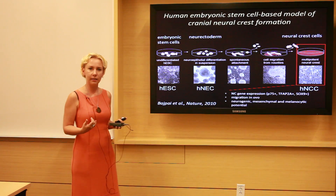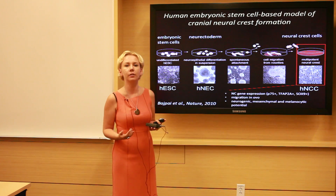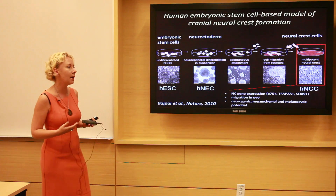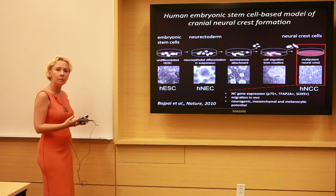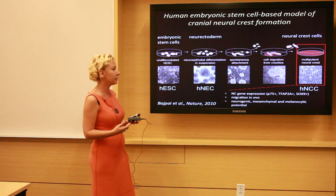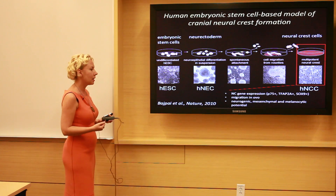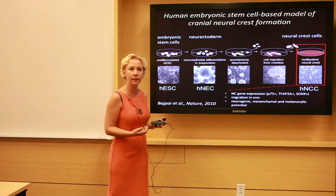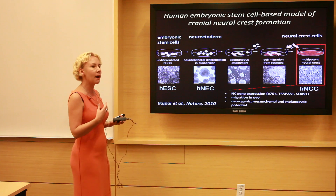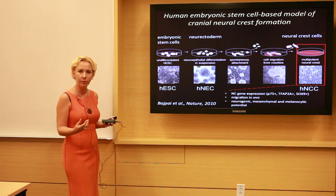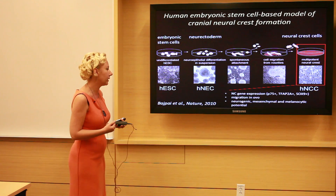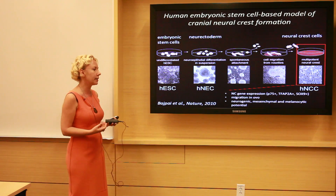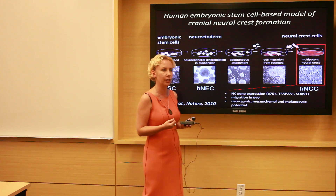But how do we study a cell type that arises at three to five weeks of gestation and is extremely transient and migratory? A couple of years ago, my lab developed a method in which we can derive migratory multipotent neural crest cells in vitro using human embryonic stem cells. These in vitro derived cells recapitulate gene expression profiles characteristic of early neural crests, migrate when implanted into chicken embryos assuming correct positional identities, and retain the plasticity of the neural crest — including neurogenic, mesenchymal, and melanocytic differentiation potential.